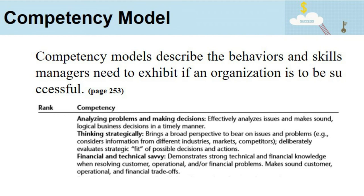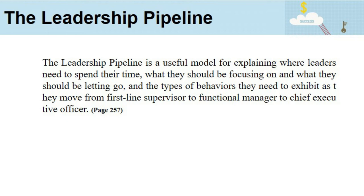The leadership pipeline is a useful model for explaining where leaders need to spend their time, what they should be focusing on, and what they should be letting go, and the types of behaviors they need to exhibit as they move from first-line supervisor to functional manager to chief executive. The pipeline also describes the lessons people should learn as they occupy a particular organizational level and the challenges they will likely face as they transition to the next level. These models provide a type of road map for people wanting to occupy the top leadership position in any organization.